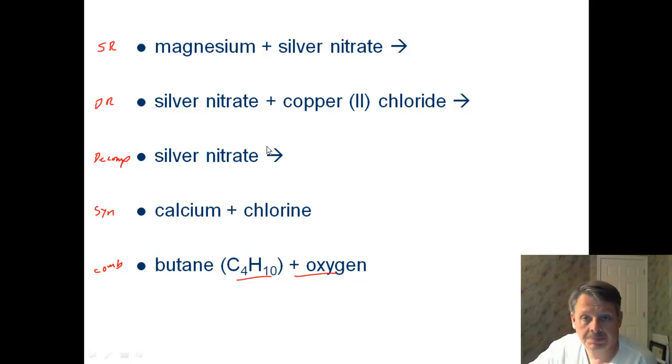So you should be able to look at this and say magnesium plus silver nitrate produces magnesium and the silver are going to switch places. So you're going to have silver and you're going to have magnesium nitrate. I'm not going to spend any more time on that. You have to figure out whether it actually happens by looking at the activity series.